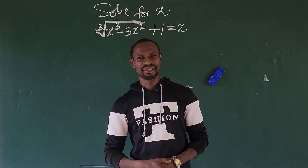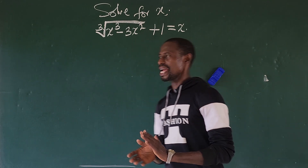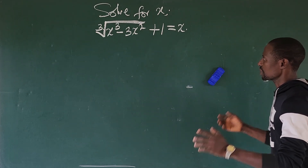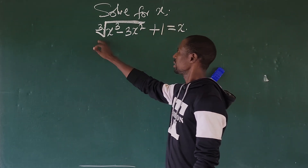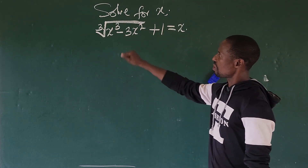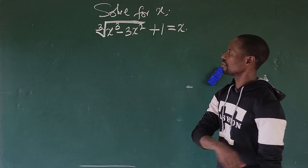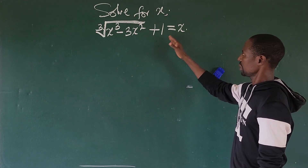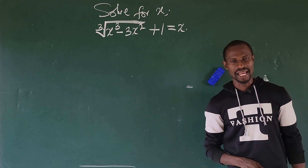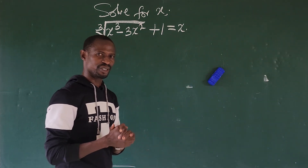Hi, welcome to today's class. Here we have another nice math challenge before us. The question is: solve for x — the cube root of x to the power of 3, minus 3x to the power of 2, plus 1, equals x. What is the value of x?